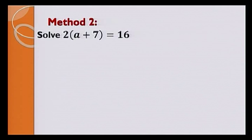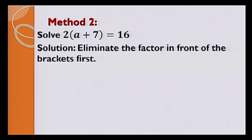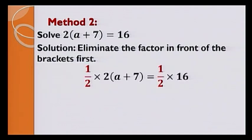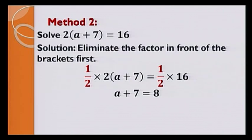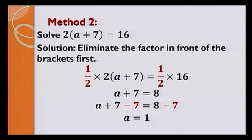The second method is to eliminate the coefficient 2 first. To eliminate 2, we multiply both sides by half, giving a plus 7 is equal to 8. Then, to eliminate plus 7, we subtract 7 on both sides, and the answer is a equals 1.